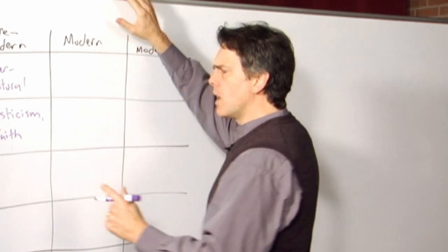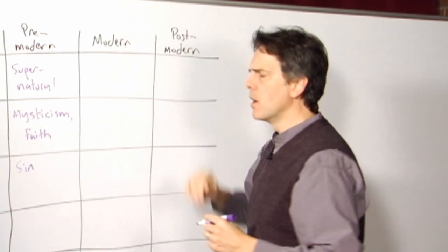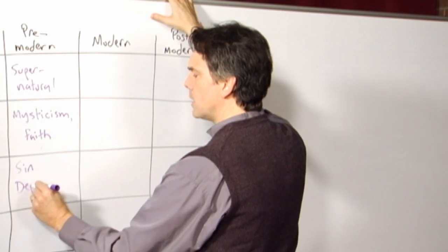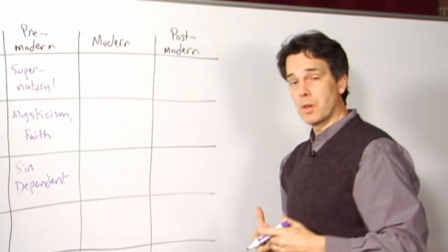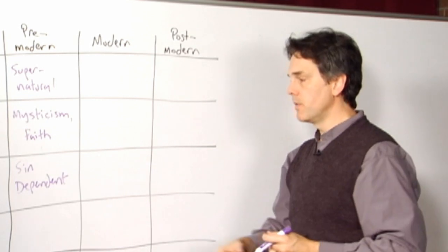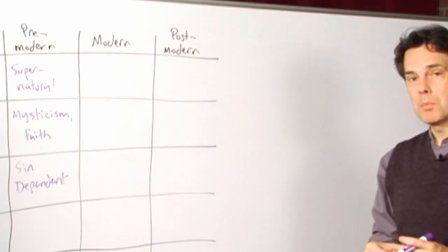Human nature, the primary presupposition here is that human beings are born in sin, that they are beings that are fundamentally dependent for their being and for their continued existence and for their ability to achieve anything positive in the world on a higher power, that higher power primarily being God,